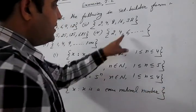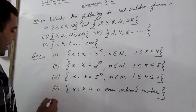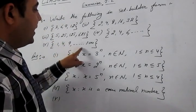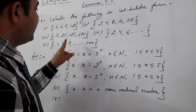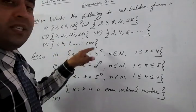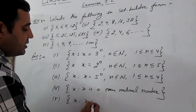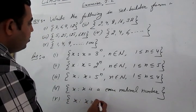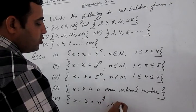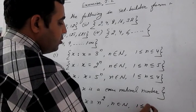Part 5: given {1, 4, 9, … , 100}. These are squares of natural numbers from 1 to 10. We write: x such that x = n², where n ∈ N and 1 ≤ n ≤ 10.